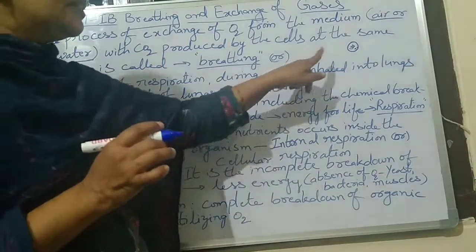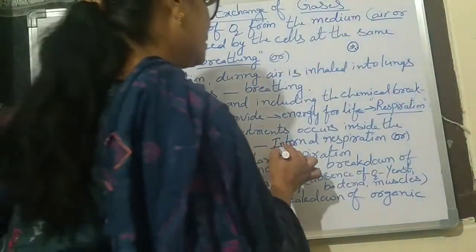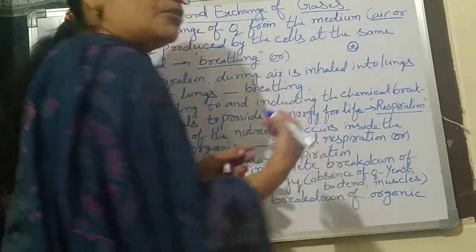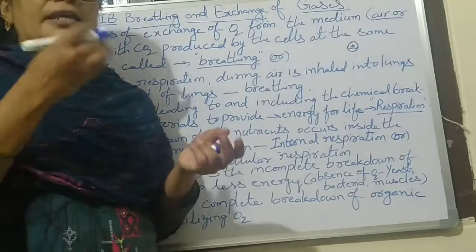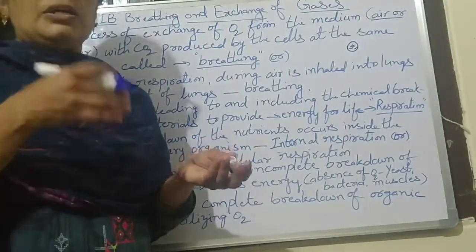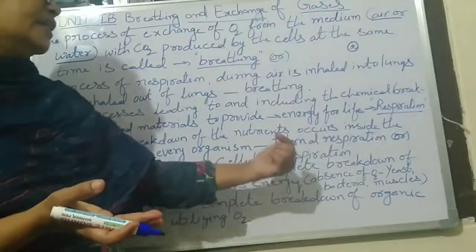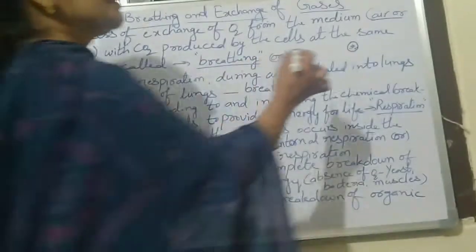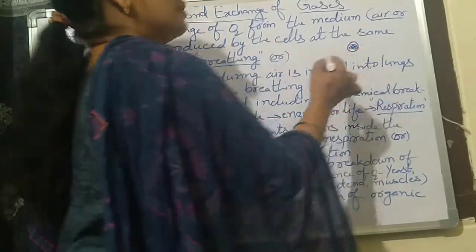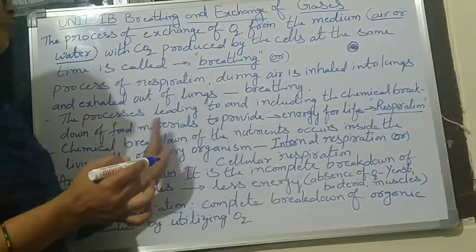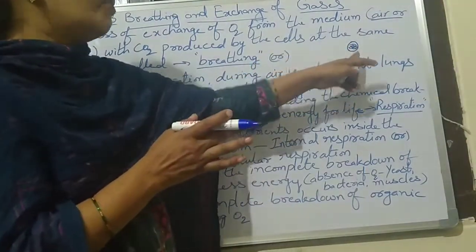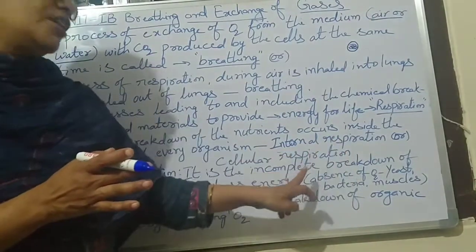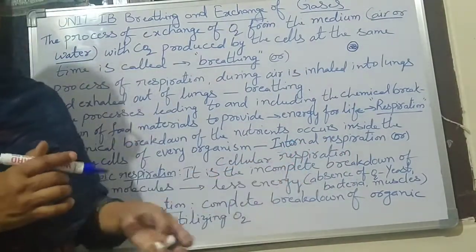External respiration means taking in air through the nostrils — taking in oxygen. Internal respiration means breakdown of nutrients occurring inside the cells. So it is called internal respiration or cellular respiration.